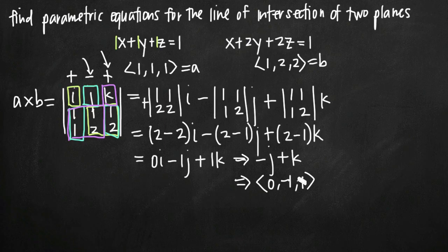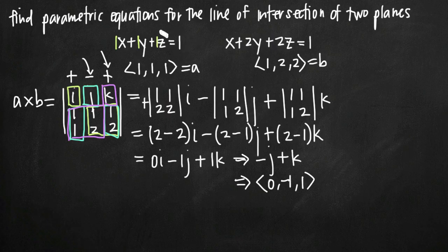We have the cross product (0, −1, 1), and now we need a point on the line. To find a point, we set z equal to 0 in both plane equations, which eliminates the z variable and leaves us with just x and y. For the first plane, x plus y plus 0 equals 1, which simplifies to x plus y equals 1. For the second plane, the z term drops away and we're left with x plus 2y equals 1.